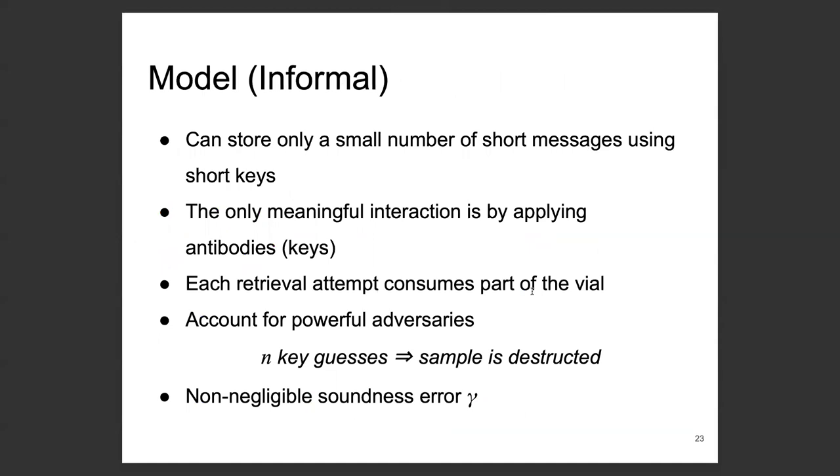After months and months of designing the token, we spent more months distilling the model that best represents biology. Our goal was to require the minimum on the biology side to produce the simplest possible construction. In particular, our consumable token can store only a small number of short messages using short keys. The only meaningful interaction with the consumable token is by applying antibodies. So present a key, either you get the message tied to that key if the key is correct, or you will get nothing. Also, each retrieval attempt will consume part of the vial. Even when you are applying the matching antibodies, these antibodies will pull down the target protein with high amount, and also consume parts of the other proteins in the mix. So there will be a degradation for the whole mix.